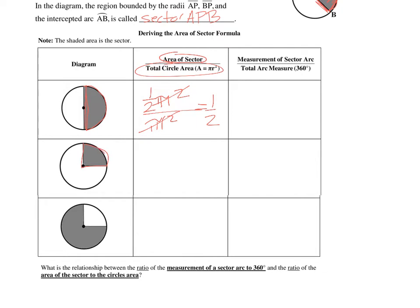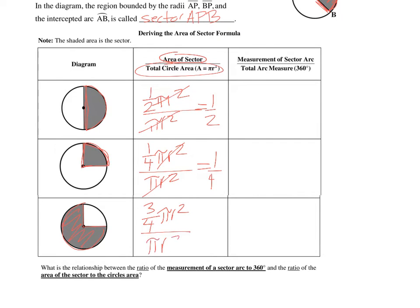For a quarter of a circle, we multiply the area formula by one-fourth: one-fourth times pi r squared over pi r squared. The pi r squared cancels, leaving one-fourth. For three-quarters of a circle, we get three-fourths times pi r squared over pi r squared, which gives three-fourths.